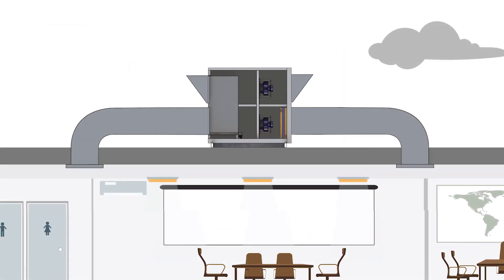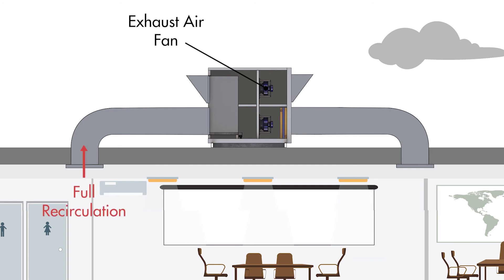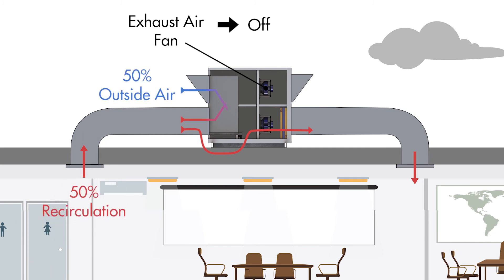One thing to note about return air bypass is that the exhaust air flow needs to be balanced with respect to the outside air flow. For example, if the unit is running in full recirculation, then the exhaust air fan needs to be turned off. But if the unit is running at 50% recirculation, then the exhaust air fan needs to be balanced to 50% air flow to equalise with the outside air flow.